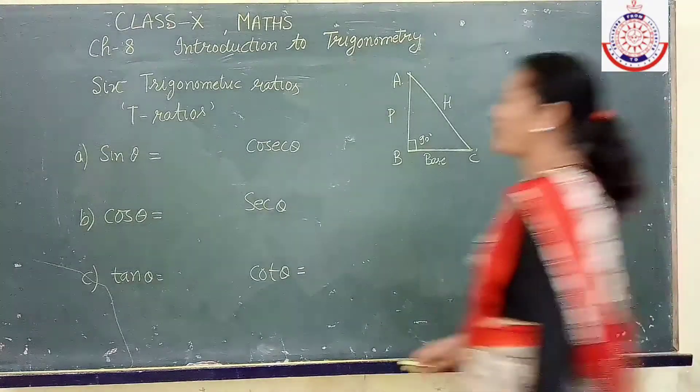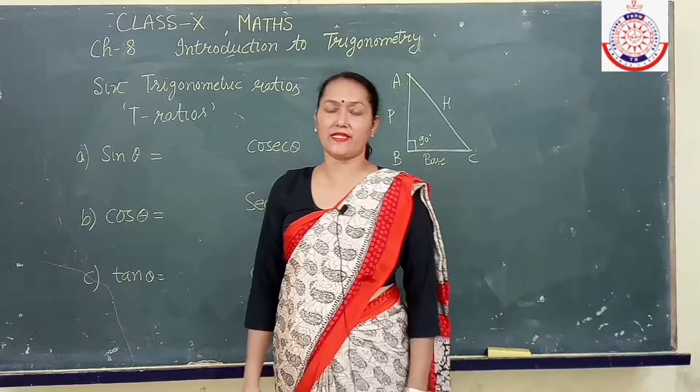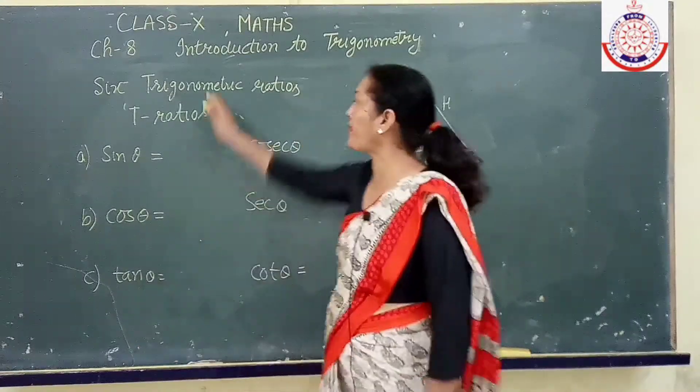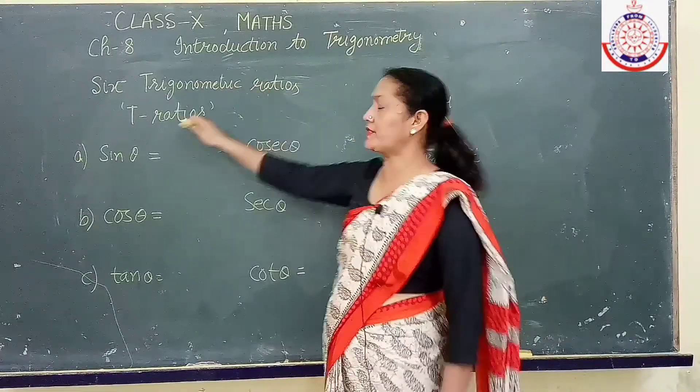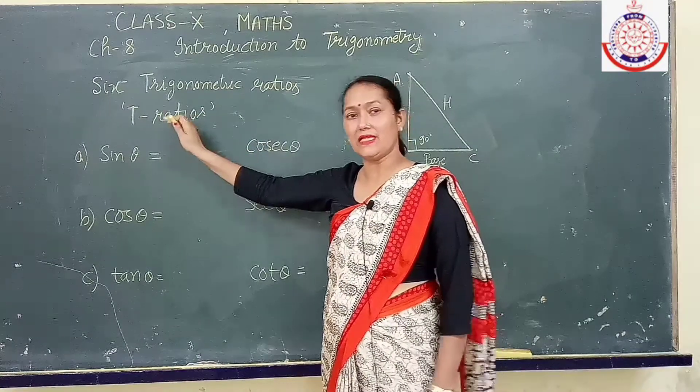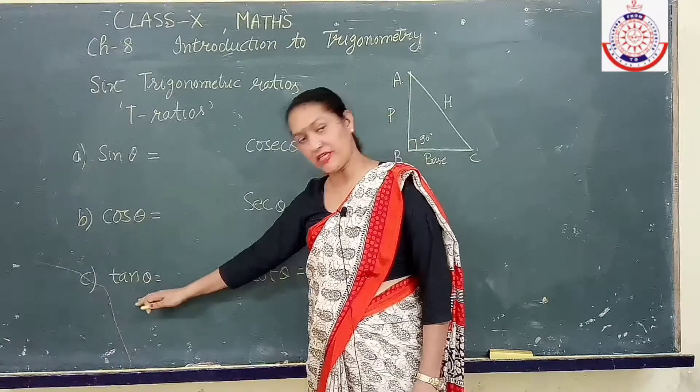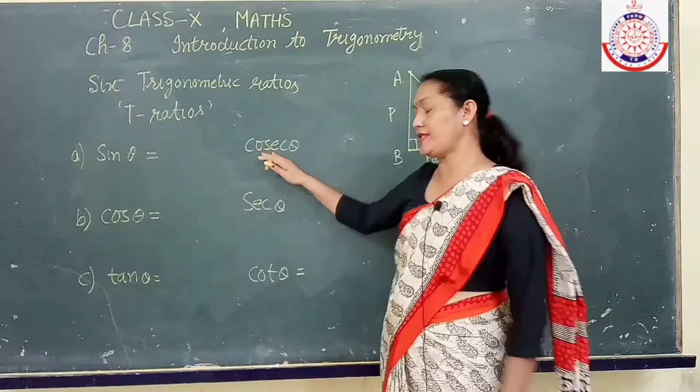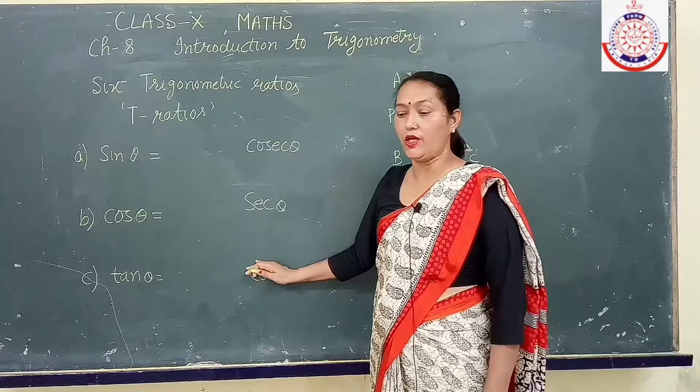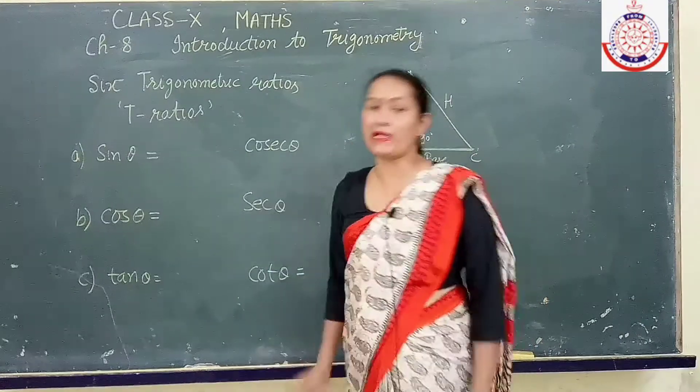In trigonometry, we will study about ratios of sides and angles. These are called trigonometric ratios. We call it T ratios also. These six T ratios are sin theta, cos theta, tangent theta, cosecant theta, secant theta and cot theta.